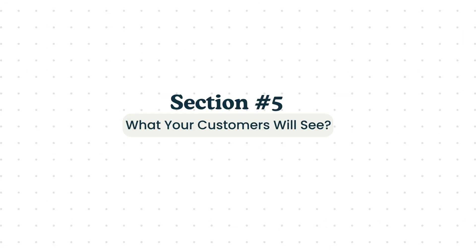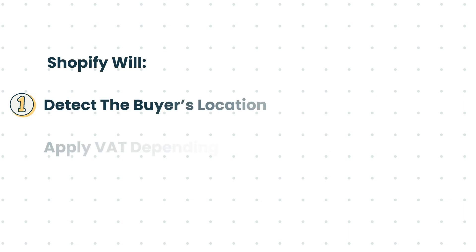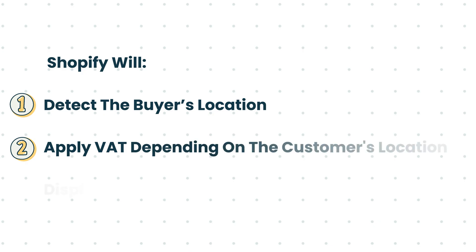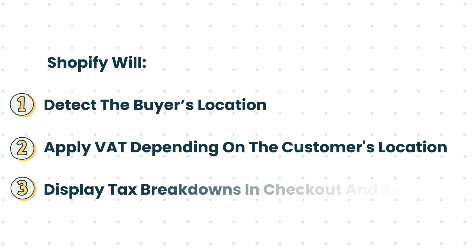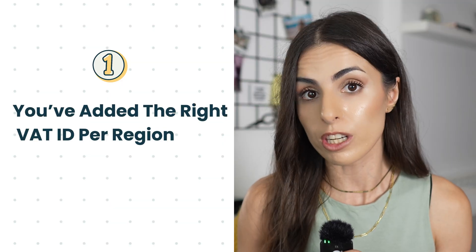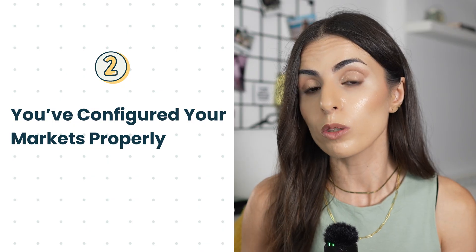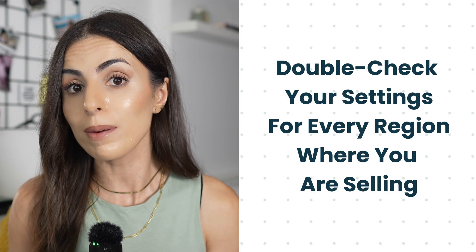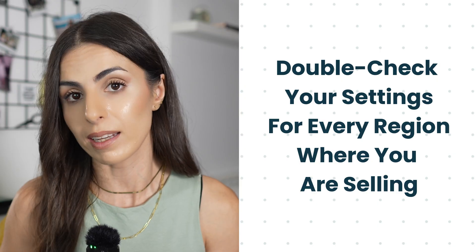When the setup is placed correctly, here is what Shopify will do. First, Shopify will detect the buyer's location. Second, Shopify will apply the right VAT depending on the customer's country. Third, Shopify will display the tax breakdown at checkout with the receipt. But this only works if you have added the right VAT ID per region and configured your markets properly. Make sure to double check your settings for every region where you are selling.